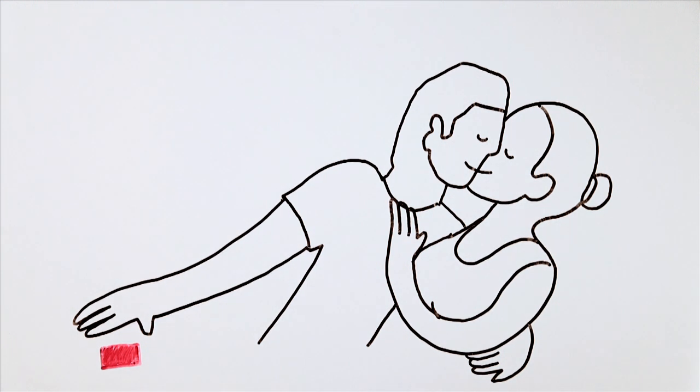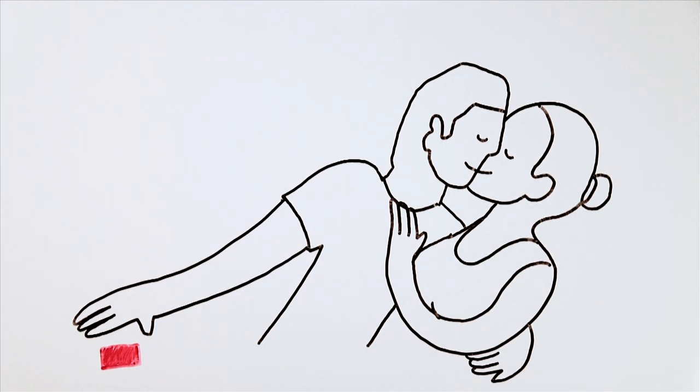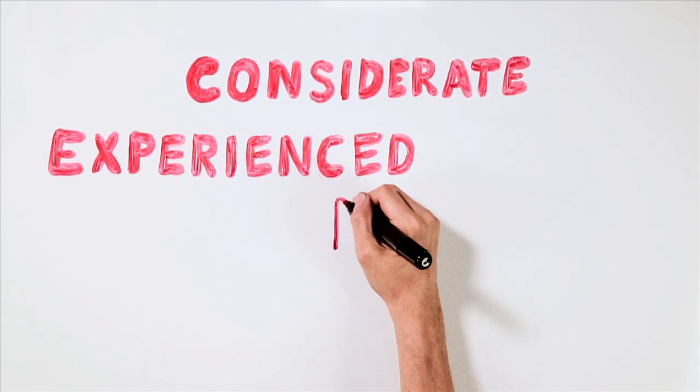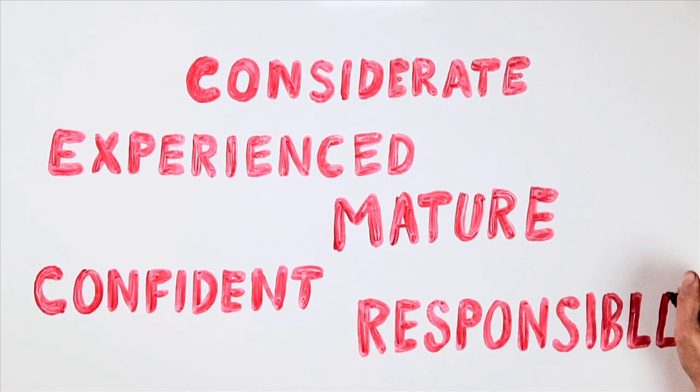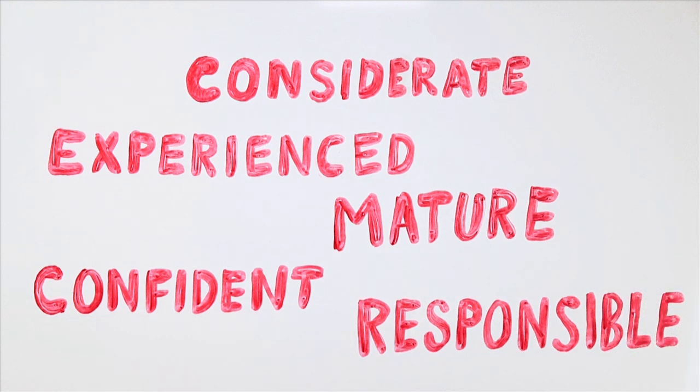But who do you want to be with? Maybe someone who's considerate, experienced, adult, self-confident, and responsible. Studies show that this is exactly how a person who takes out a condom is seen.